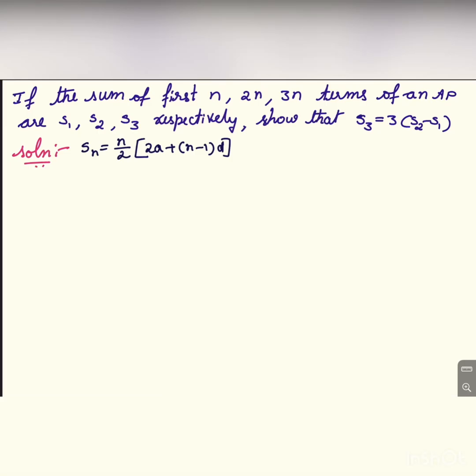If the sum of first n, 2n, 3n terms of an AP are s1, s2 and s3 respectively, show that s3 is equal to 3 into s2 minus s1.